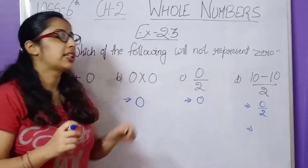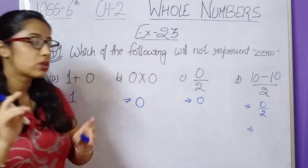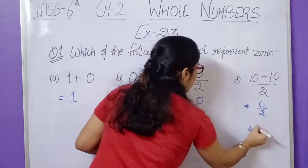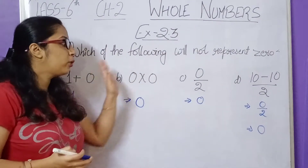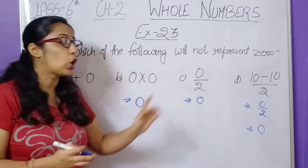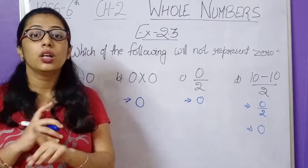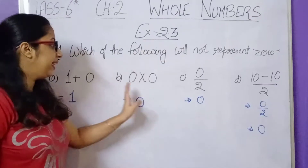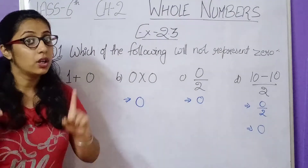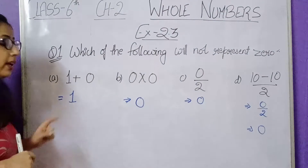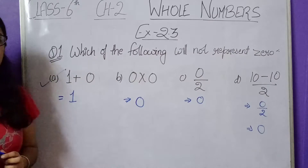If you divide 0 from any number, the answer is 0. So options B, C, and D all give us 0. But option A — 1 plus 0 — gives us 1, not 0. So the answer is option A.